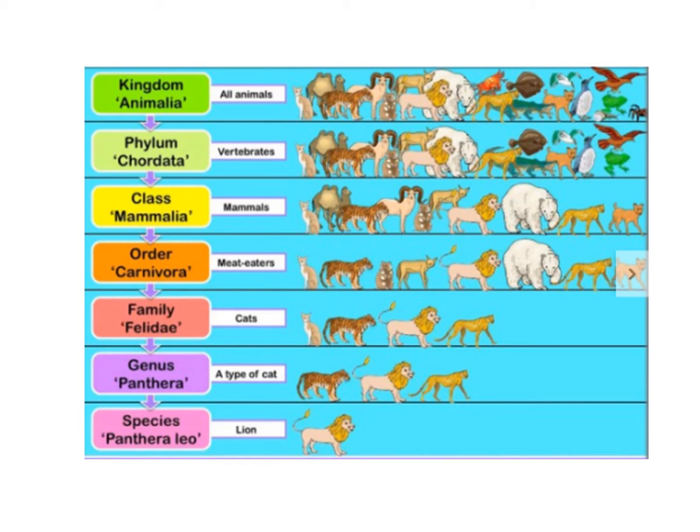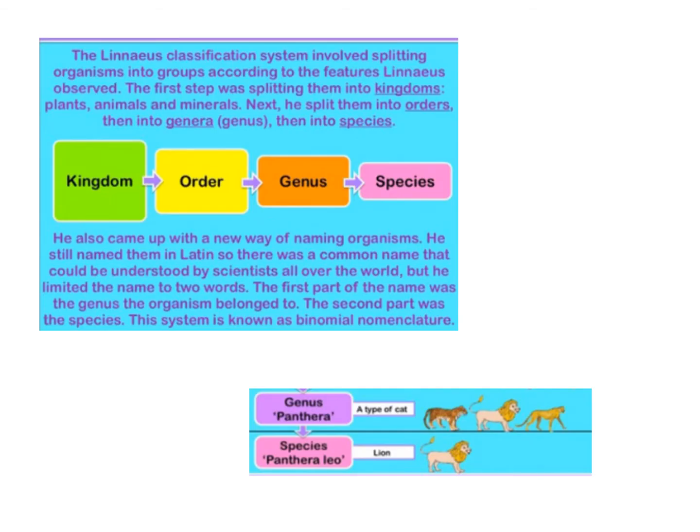So we've worked our way down from all the animals to the vertebrates, the mammals, the meat eaters, the cats, a specific type of cat, and then the lion. The main point to take from here is how Linnaeus named species. He came up with a new way of naming organisms in Latin so that everybody could use it all over the world. The first part of the name came from the genus, and the second part was the species.